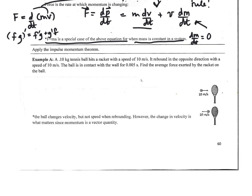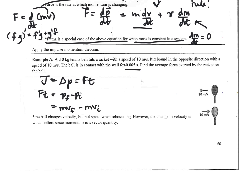Now, how do we apply the impulse-momentum theorem? We have a 0.1 kilogram tennis ball hitting a racket with a speed of 10 meters per second. It rebounds in the opposite direction with a speed of 10 meters per second, and the ball is in contact with the racket for a very short period. Find the average force exerted by the racket on the ball. We know that impulse equals the change in momentum, which equals Ft. So Ft equals P_final minus P_initial, which is MV_final minus MV_initial.